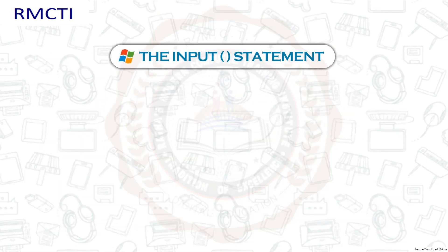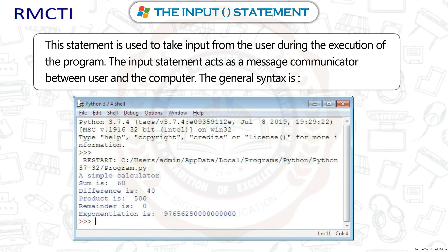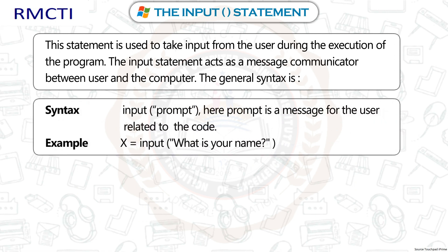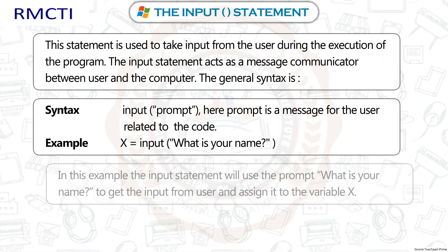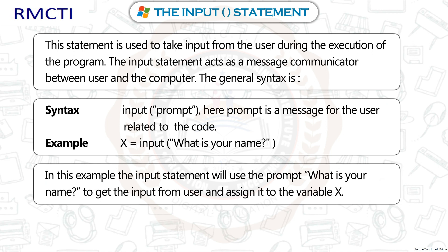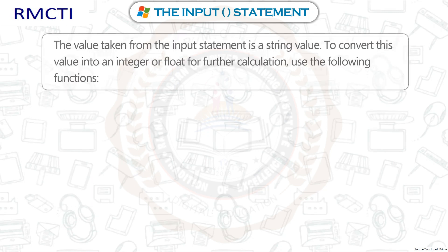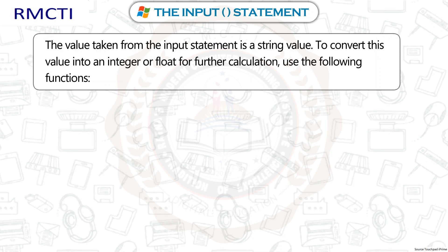The input statement is used to take input from the user during the execution of the program. It acts as a message communicator between user and computer. The general syntax is: input('prompt'), where prompt is a message related to the code. For example, x = input('What is your name?'). The input statement uses the prompt to get input from the user and assigns it to the variable x. The value taken from the input statement is a string value.